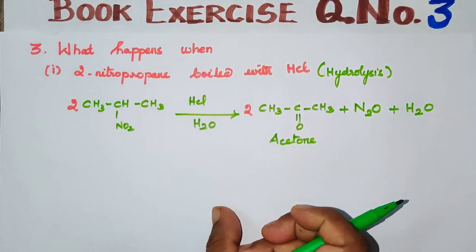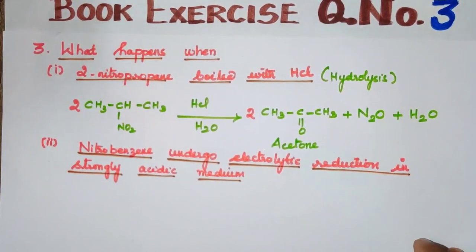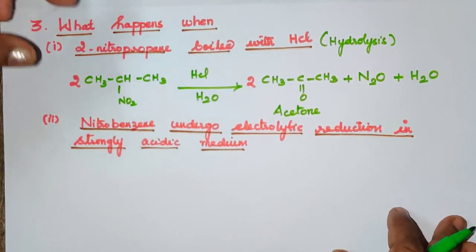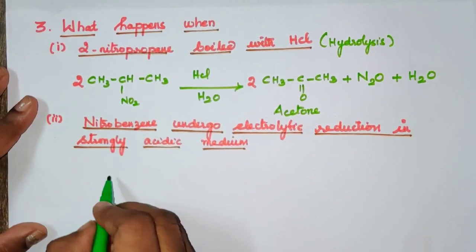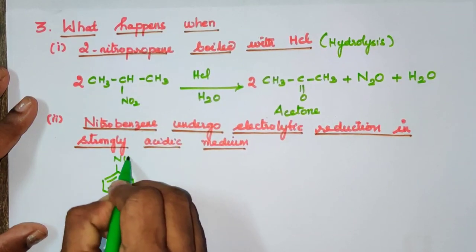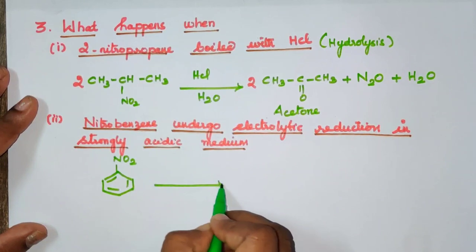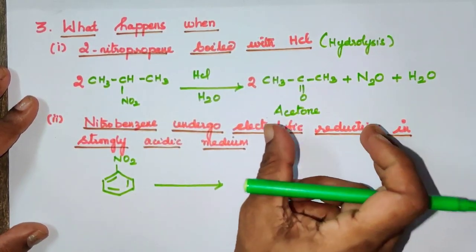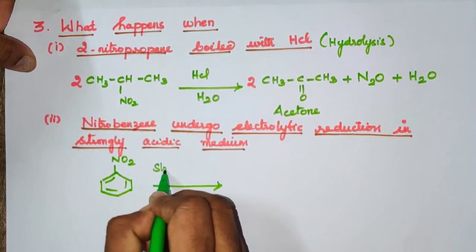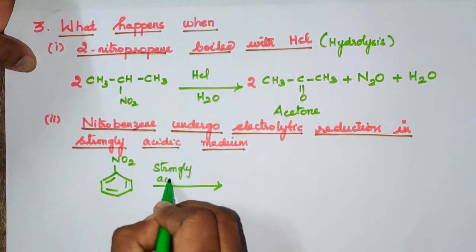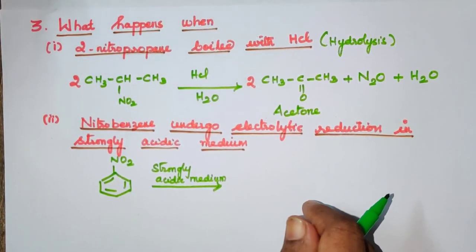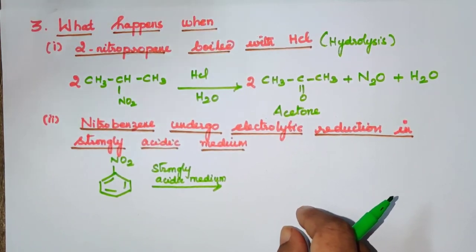Now we move to the second question. Again, we need to note the reactant and the reaction. We have to look at nitrobenzene undergoing reduction. The reduction condition is strongly acidic medium.